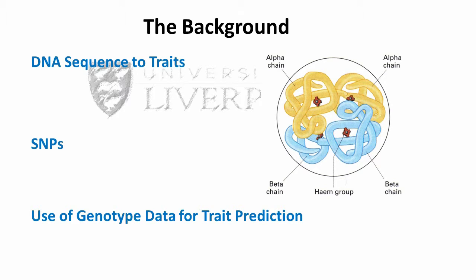I'm going to talk about the background, specifically the DNA sequence and traits. The DNA sequence is a 3 billion length, 4-letter alphabet code with 99.9% inter-individual similarity. One gene is a section of this sequence that provides a blueprint for the amino acid sequence that makes up a polypeptide chain. The sequence that makes up the gene is known as a genotype.